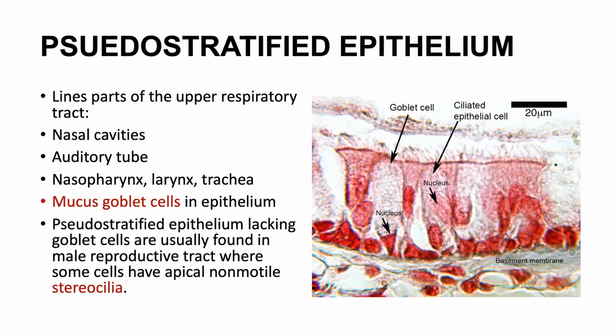Pseudostratified ciliated epithelium lines part of the upper respiratory tract — the nasal cavity, auditory tube, nasopharynx, larynx, trachea. Just remember the respiratory tract. They have mucus-producing goblet cells in the epithelium. What do goblet cells produce? Just mucus. Pseudostratified epithelium lacking goblet cells also exists. You know where else you can find goblet cells? In simple columnar epithelium — in the intestine. Goblet cells can be found in the gastrointestinal tract as well as the respiratory epithelium.